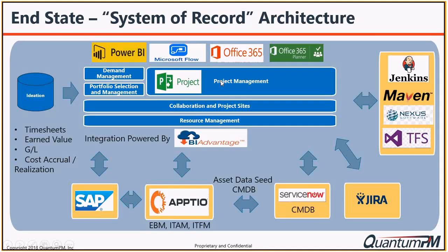Other inputs of demand might be ServiceNow. ServiceNow does an excellent job at incident management. Depending on the type of incident — if it's a simple how-do-I question, there's no work associated with it and it's routed to call center-based functionality. But you might also have an actual incident where work has to be completed, and you'd have BI Advantage create a task within Project Online. This would be the home for all the work management — waterfall-based demand, JIRA-based demand for agile sprints, and incidents.